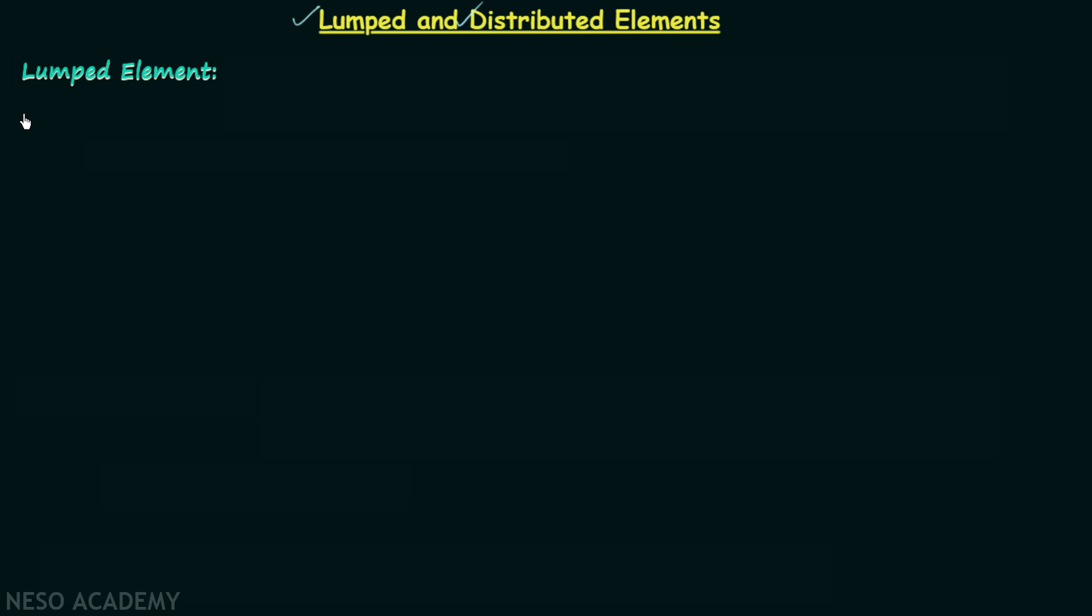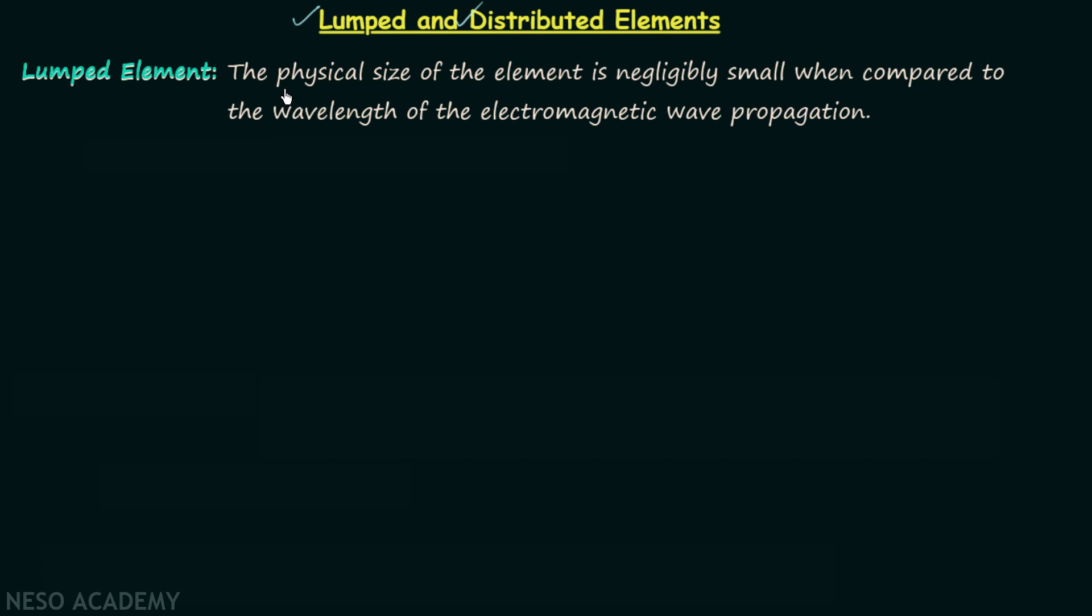An element is said to be lumped element when the physical size of the element is negligibly small when compared to the wavelength of the electromagnetic wave propagation. For example: resistor, capacitor, inductor, etc.